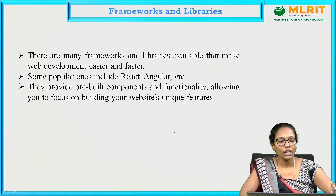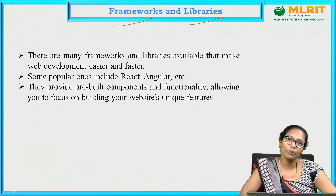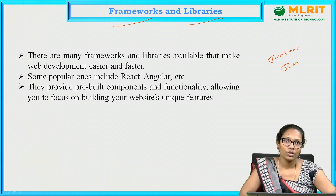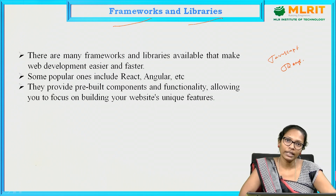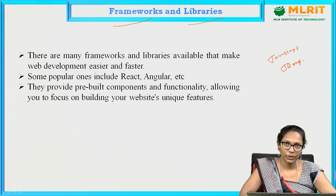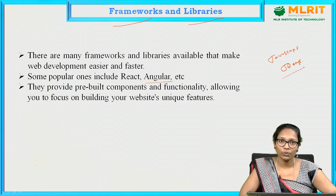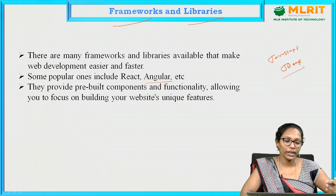What are frameworks and libraries? Along with front end, back end, and database, we also have frameworks and libraries which make our process simpler. For example, in JavaScript we have predefined libraries like jQuery, which provide many functionalities for animations and other things — we can use them directly without writing many lines of code. Examples include AngularJS, which is a framework providing many functions and modules to make the web programming process simple.